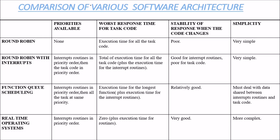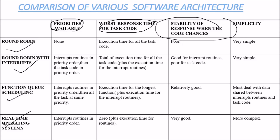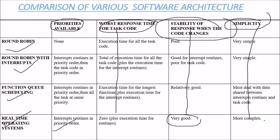Let us compare various software architectures: round robin, round robin with interrupts, function queue scheduling, and RTOS. For RTOS, priority is available, the worst response time for task code is zero plus execution time for the routines, the stability of response when code changes is very good, and simplicity is more complex. These comparisons highlight the trade-offs among these customary software architectures.